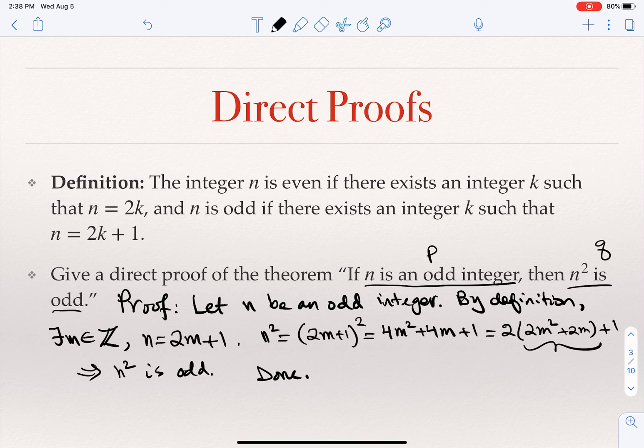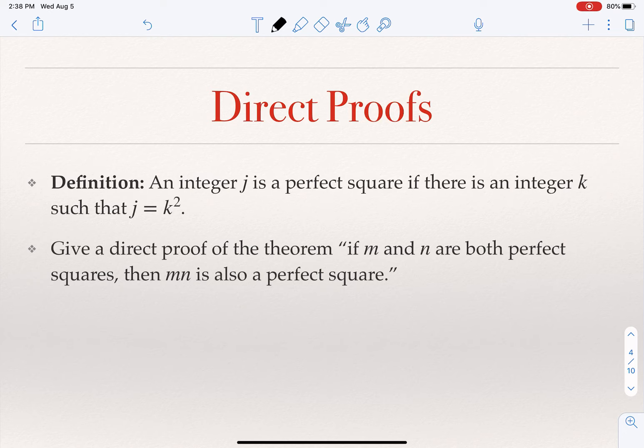This is a direct proof — I started from the premise and went all the way to the conclusion. Another example of using direct proof: an integer j is a perfect square if there is an integer k such that j = k². So 4 is a perfect square, 9 is a perfect square, 16 is a perfect square, and so on.